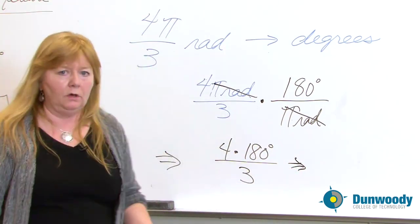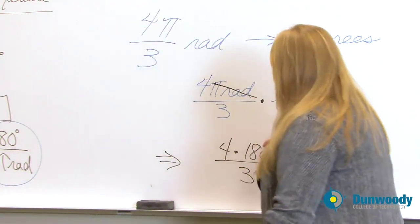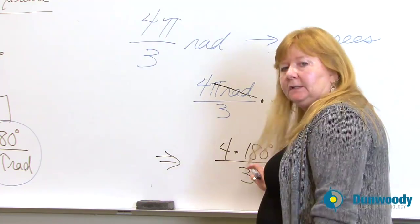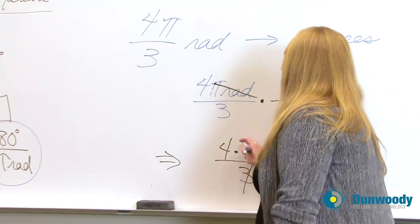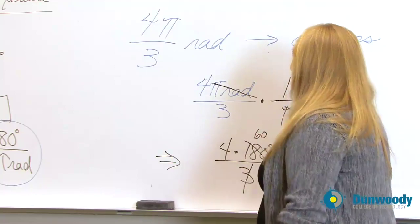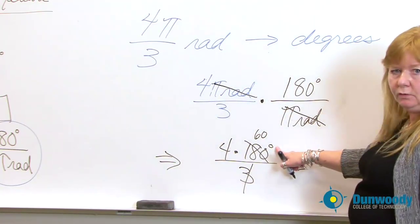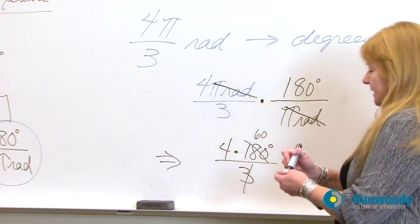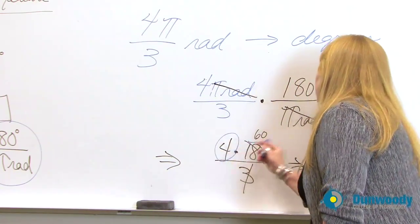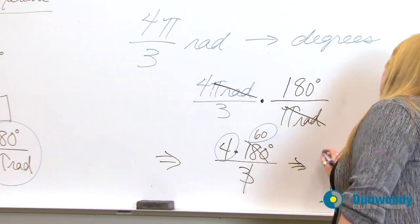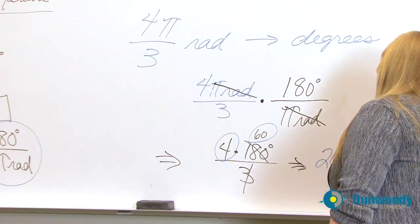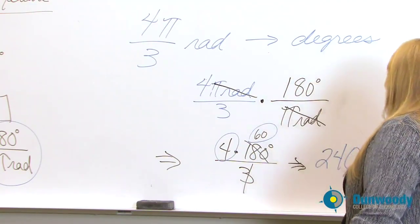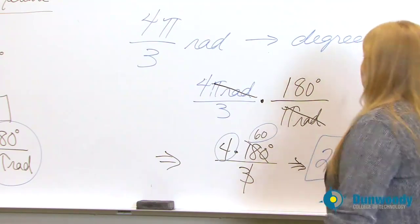So when you simplify this, and I'm hoping that you know how, the 3 goes into 180 how many times? 3 times 60 gives you 180. Notice the degrees remain. And I have 4 times 60. Just doing the math. This should be something that you know. 4 times 60 is 240. And my unit of measure is in place, 240 degrees.